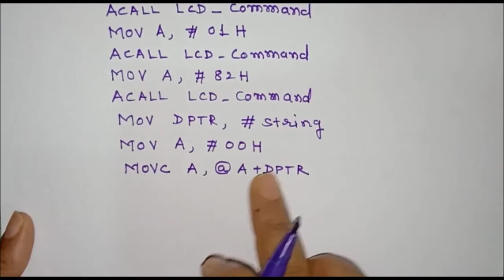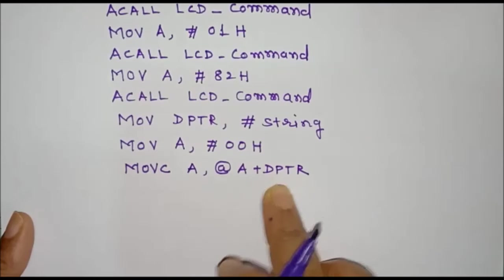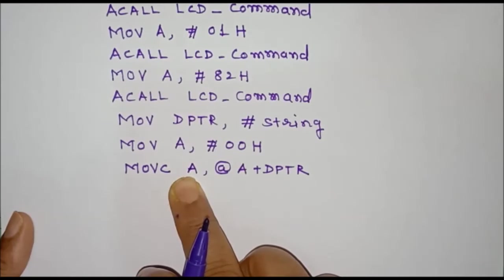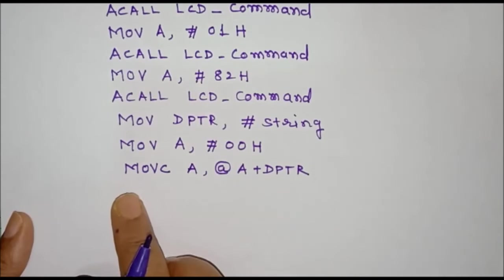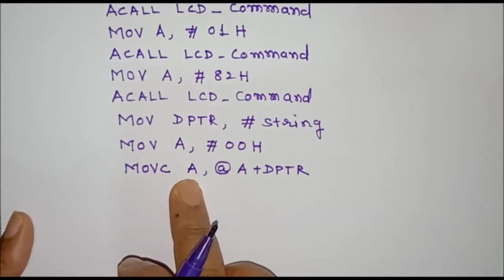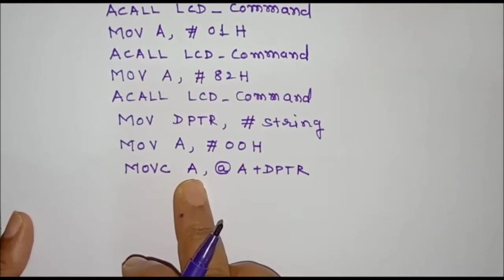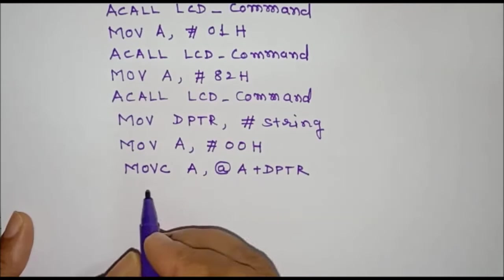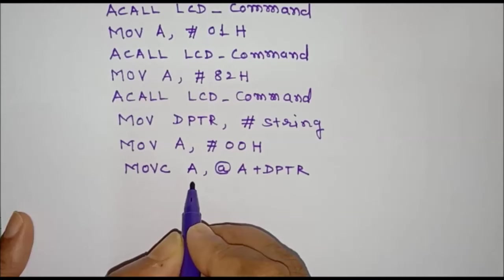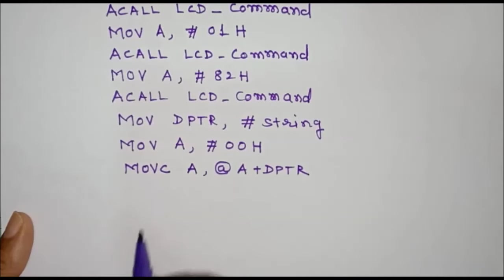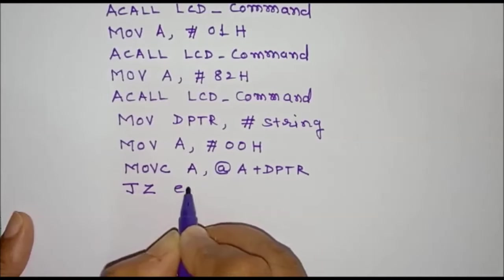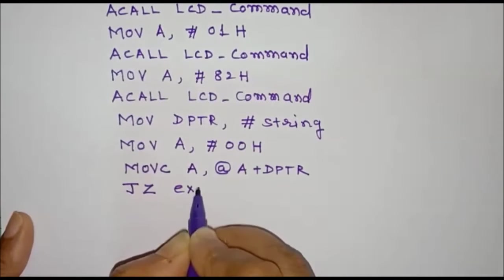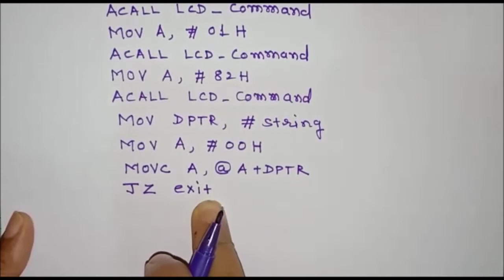Since DPTR holds the address of the first character of the string and the accumulator is initialized to 0, this instruction reads data from that address and stores it in the accumulator. Next, we check whether the accumulator contents are 0 to determine whether this is the end of the string. For that we use the JZ instruction and jump to the exit label.